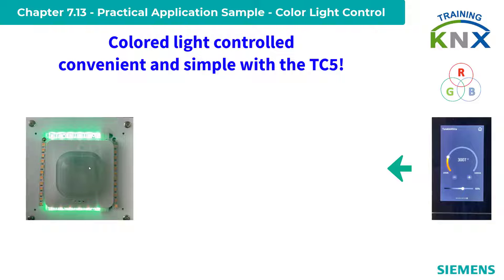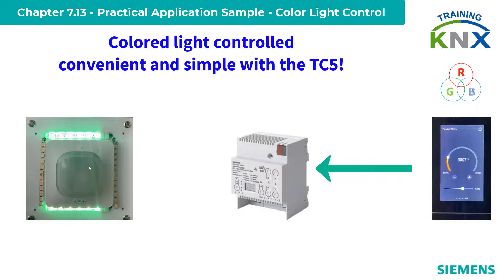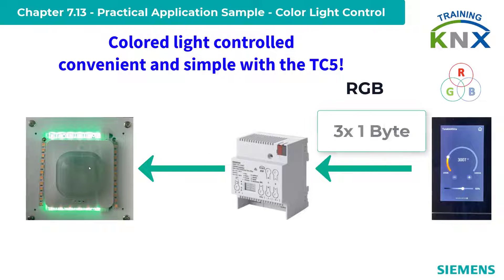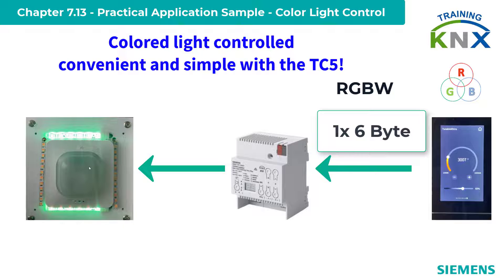However, the control is not uniform. There is, for example, the control of the three basic colors red, green and blue with three individual one-byte values or a three-byte value, and RGBW with control values of either four times one-byte or one times six-byte length.